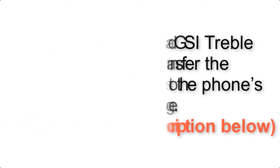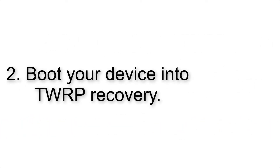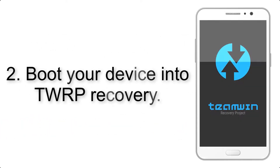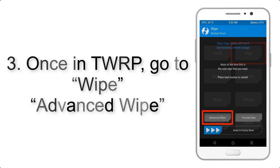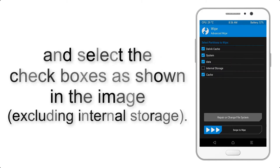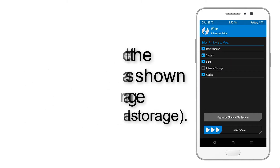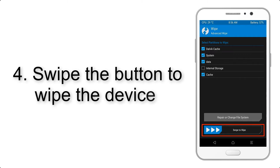Step 2: Boot your device into TWRP recovery. Once in TWRP, click on Wipe, then Advanced Wipe, and select the checkboxes as shown in the image, excluding internal storage.